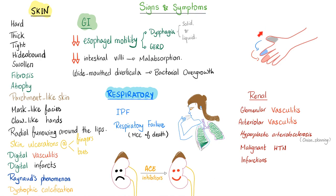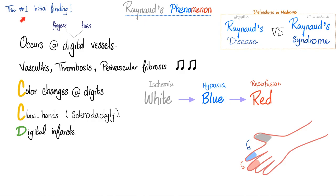Raynaud's phenomenon: fingers start as white, then become blue, then become red. It is the most common initial finding and occurs at the digital vessels — fingers and toes. Vasculitis, thrombosis, and perivascular fibrosis cause color changes. Claw hands and sclerodactyly result when the skin is so tight. White means ischemia — no blood supply. Blue means hypoxia — no oxygen. Red means reperfusion.